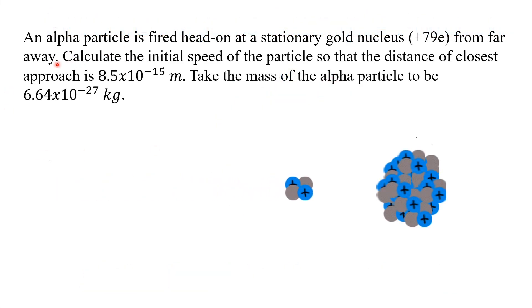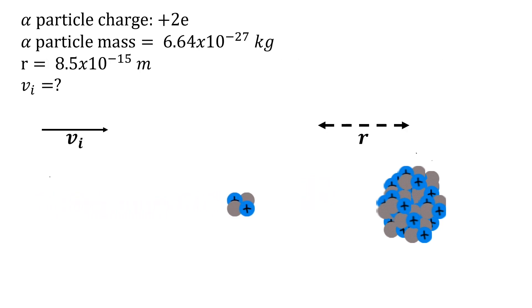This is a question where an alpha particle is given an initial velocity and fired at a gold nucleus which is held stationary. The question gives the closest distance that the alpha particle gets to the gold nucleus and asks to calculate the initial velocity that the alpha particle was shot at.